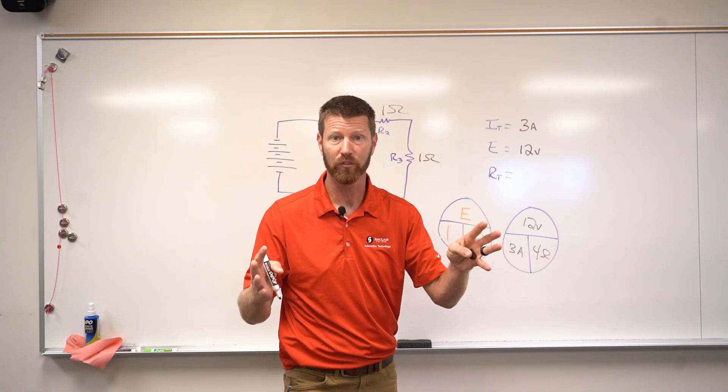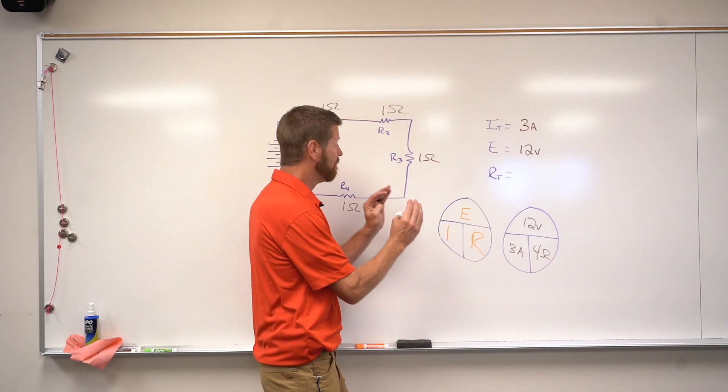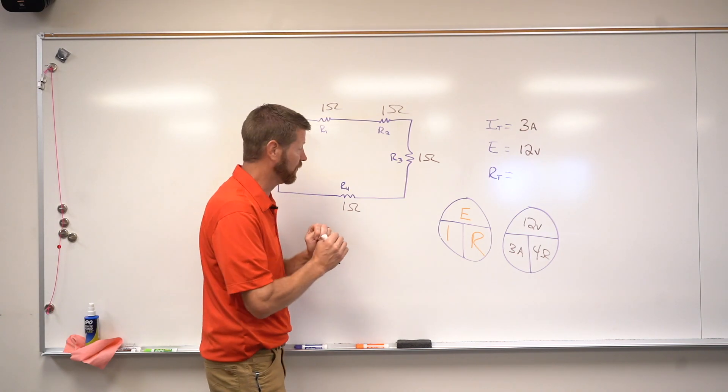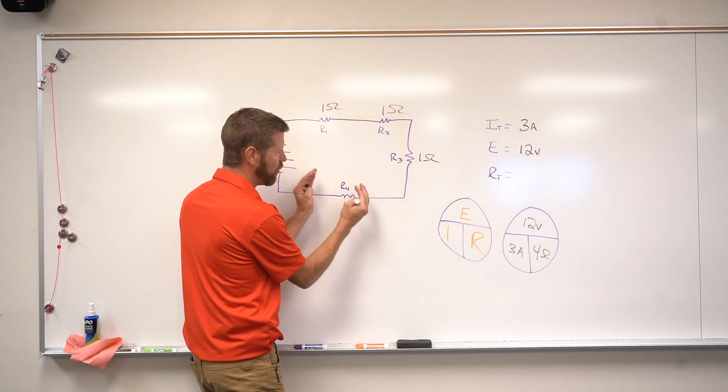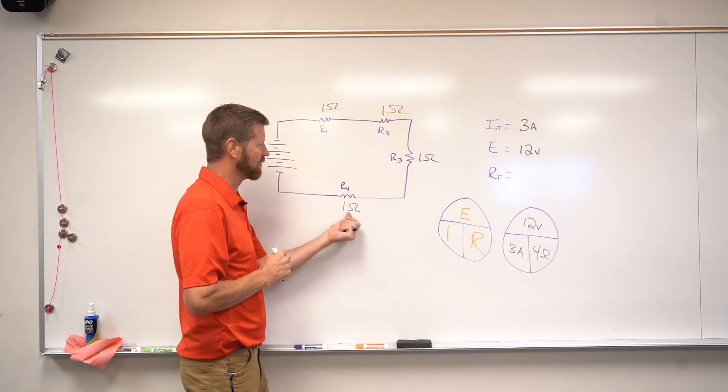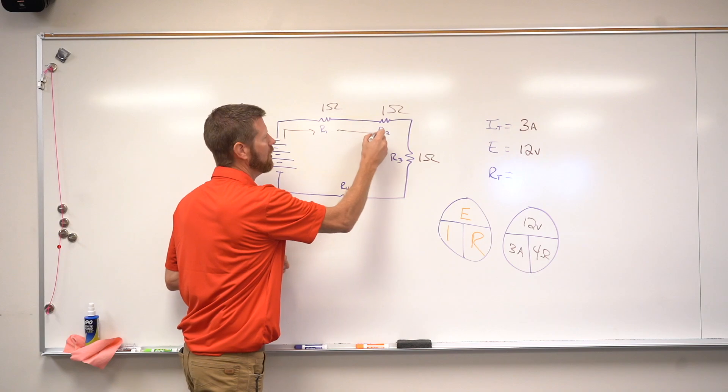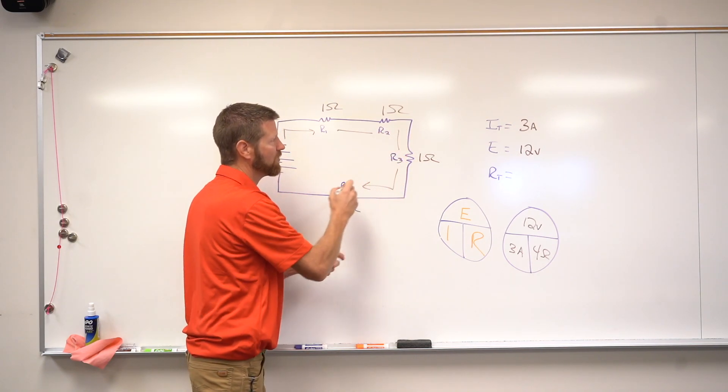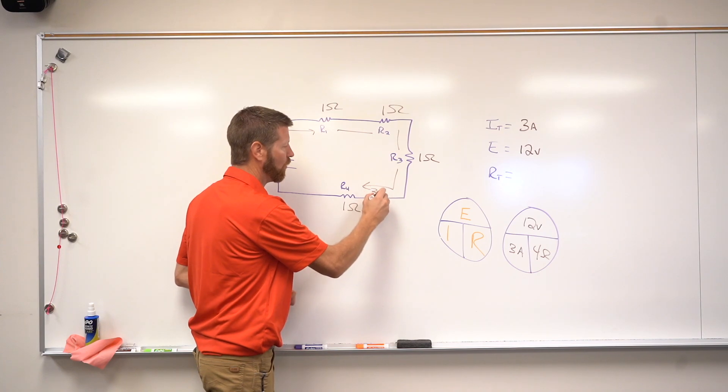So again, we just did a quick crash course in Ohm's Law, but what if we did that individually for the individual resistors? So what if I take these numbers and just focus on this resistor right here? We'll use resistor 4. So I already know that the amperage through the circuit is consistent, and it's going to be 3 amps, no matter where I measure it.